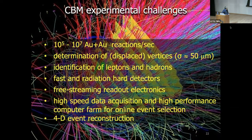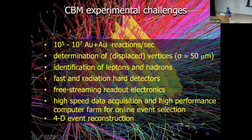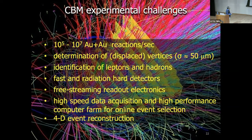Because the collision rate is very high, we cannot afford to use triggers to select data. Instead, we use free-streaming with a time stamp associated with each signal; all data are collected and reconstructed in software offline. This is why the system is called 4D. In India, we are building the Muon Chamber — the MUCH detector — which has a segmented absorber to absorb hadrons.